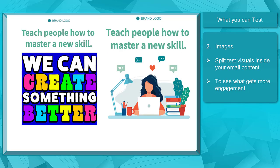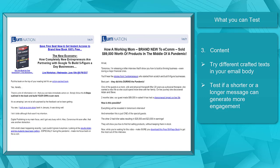Next, Images. After making your subject headline attract your subscribers to click on your email, you can optimize your visuals inside your email. You can test what image gets more engagement. Next, Content. You can try testing a different set of texts in your email body. You can see what content is most appealing to your subscribers. You can monitor if a shorter message can generate more engagement than longer content.